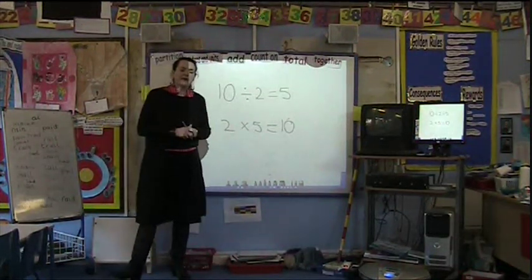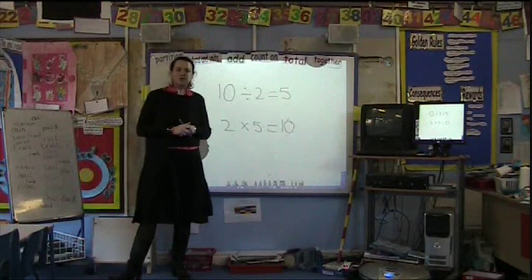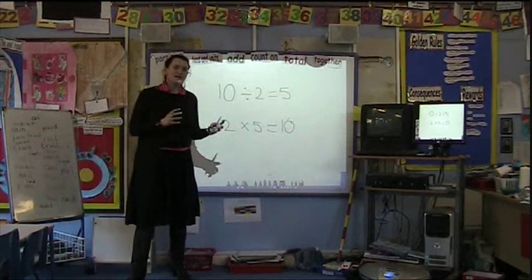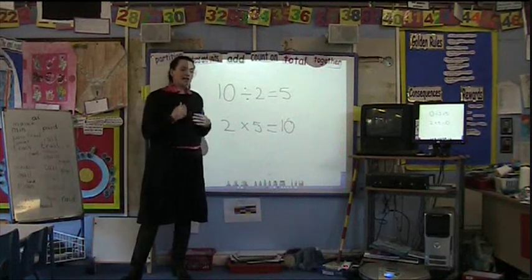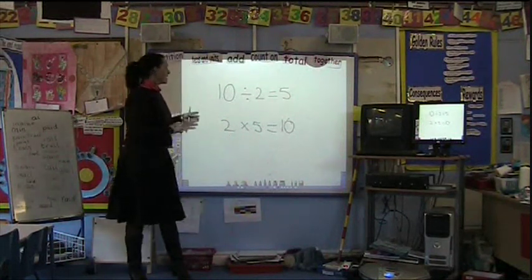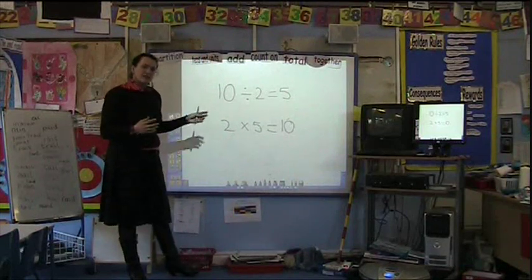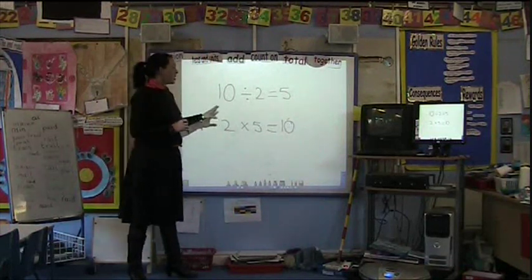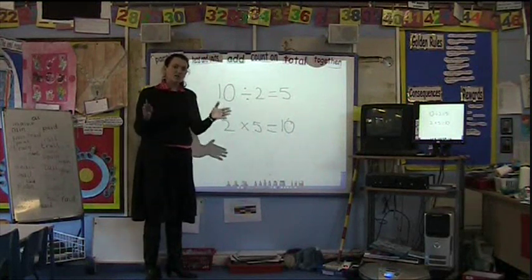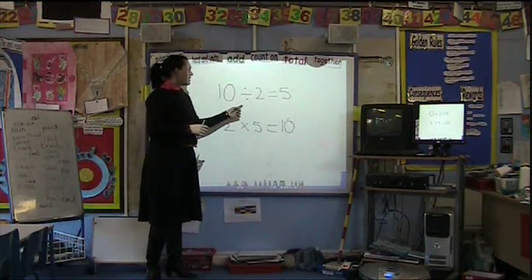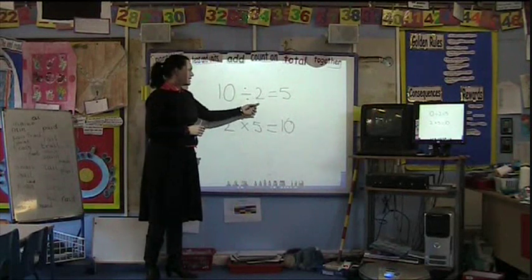We can also use multiplication and division to help children to halve and double, and this is directly related to the multiplication and division that we've just been speaking about. Children, by the end of Key Stage 1, should know that to halve would mean to split into two groups. So they can relate halving to dividing by 2.